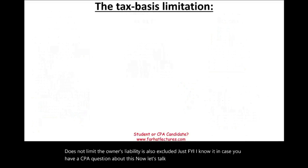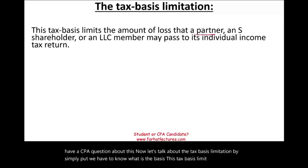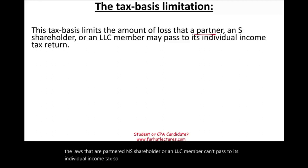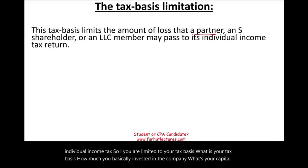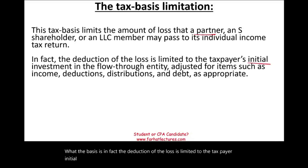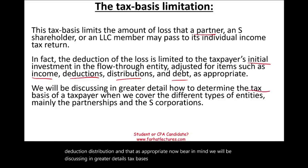Now let's talk about the tax basis limitation. This tax basis limits the amount of loss that a partner, an S corporation shareholder, or an LLC member can pass through to their individual income tax return. You are limited to your tax basis — essentially how much you invested in the company. The deduction of the loss is limited to the taxpayer's initial investment in a flow-through entity, adjusted for items such as income, deductions, and distributions. We will discuss tax basis in greater detail later, as different entities — like a partnership versus an S corporation — have slightly different rules.